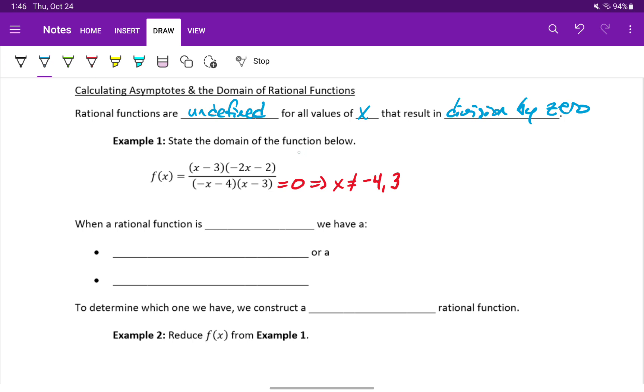This means that our domain gets split up from being negative infinity to infinity, to instead being negative infinity to negative four, union negative four to three, union three to infinity.